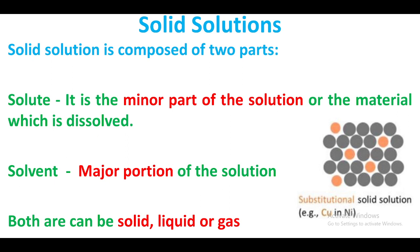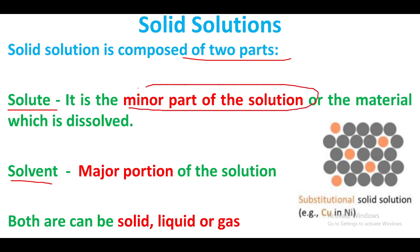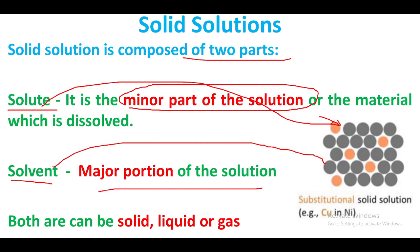A solid solution is composed of two parts. The solute is the minor part of the solution, and the solvent is the major portion. For example, copper is the major portion (solvent) and nickel is the small portion (solute). This solution can also be in solid, liquid, or gaseous form.